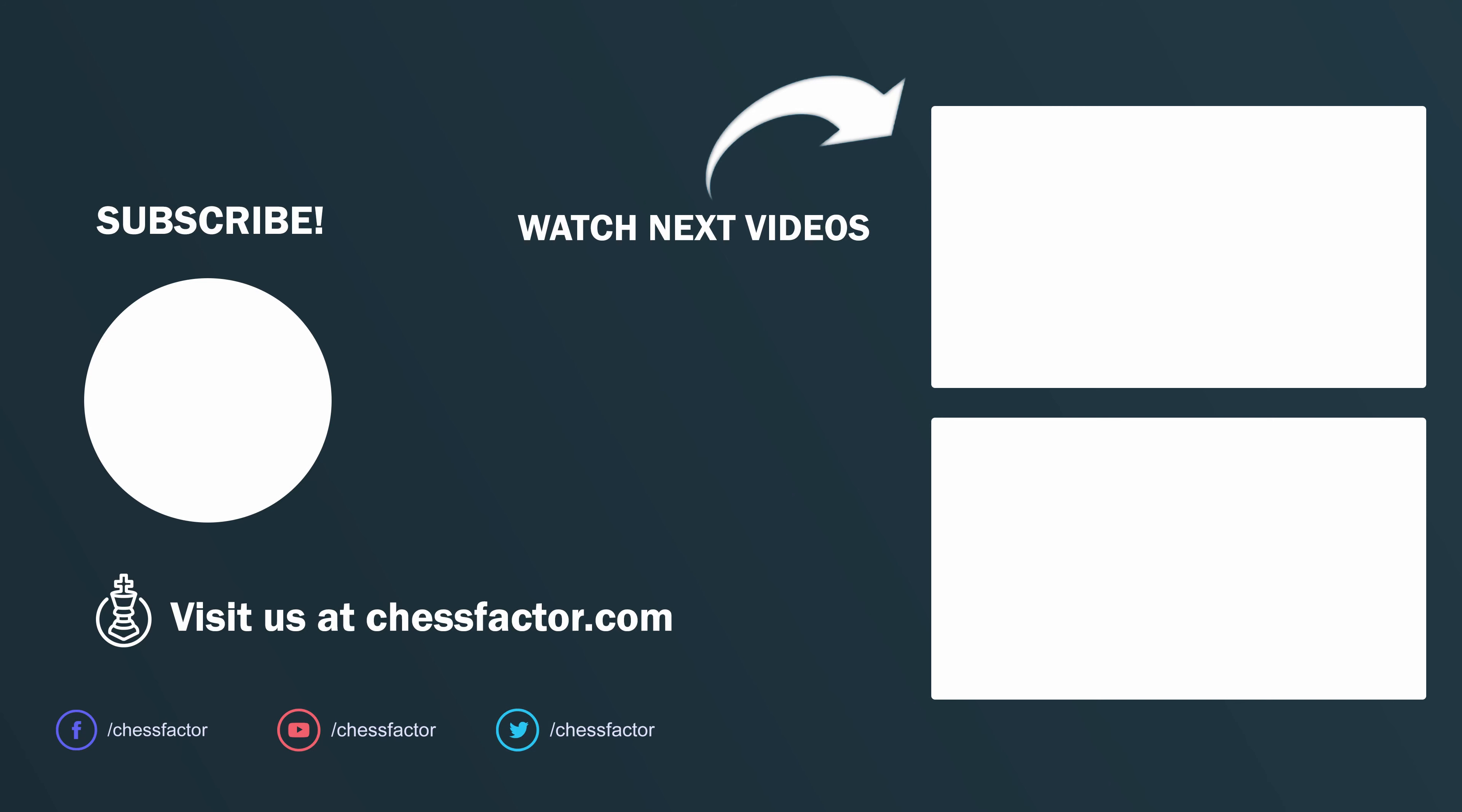So if you invest the time, you take the time to learn this either as white or as black or as both, then for sure it will pay off over the coming months and years in your chess career. So hopefully you will join us in this journey uncovering the Italian game, and we look forward to seeing you in our first detailed video, where we will begin examining the move bishop to c5, the classical variation in much more detail. So see you then.